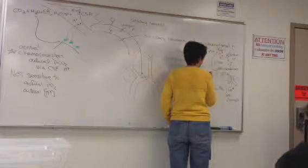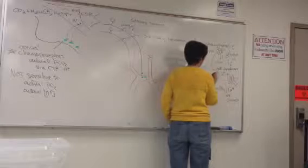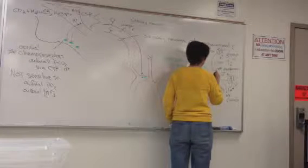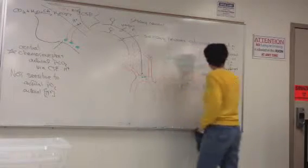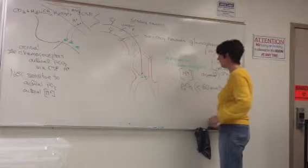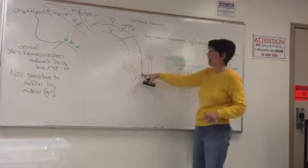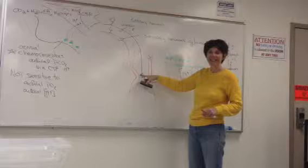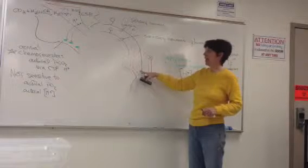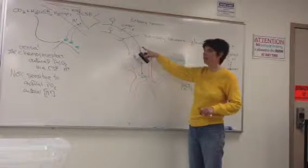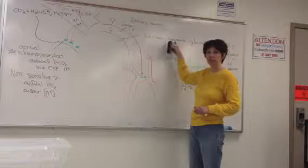Vesicles containing dopamine fused with the cell membrane. And dopamine is released and binds to the ligand-gated channels of the sensory vagus nerves or the sensory glossopharyngeal nerves.